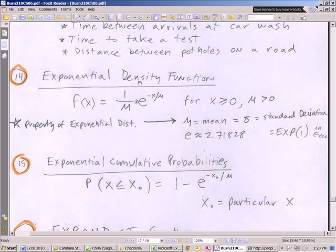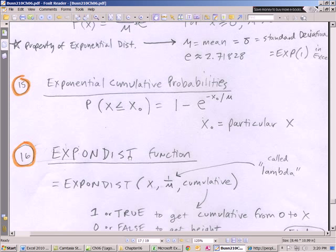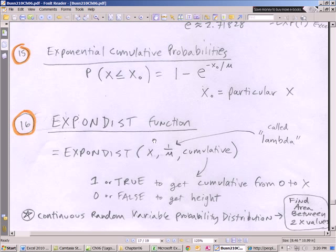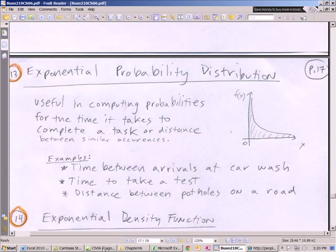Now we're going to have the same two types of function, a density or mass function that determines the height of the curve and our cumulative. Now here's the formula 1 minus e, and there's a way to get e in Excel using the exponent function, minus our particular x divided by our mu. There's also an exponent dot dist function. That's a new dot in all of the 2010 functions. We'll give it our particular x and lambda, which will be 1 divided by mu, and cumulative. Same thing as before. 1 gets cumulative from 0 to x, and false gets the height. Again, it's a continuous random variable probability distribution. Let's go over to our Excel.